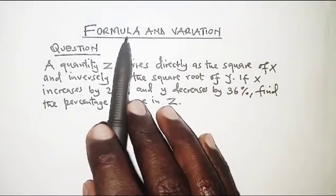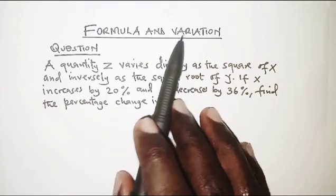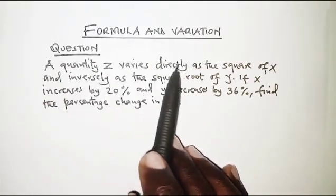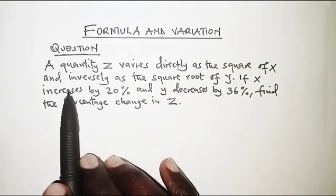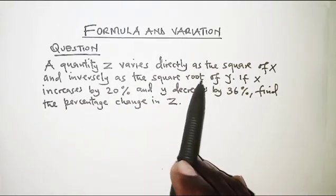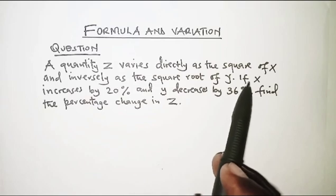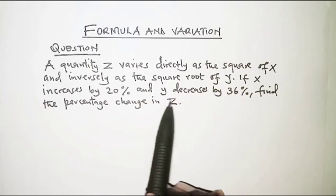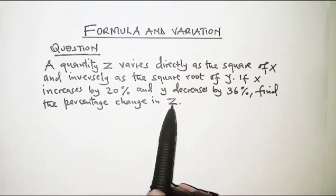Today we look at formulae and variation. The question reads: a quantity z varies directly as the square of x and inversely as the square root of y. If x increases by 20% and y decreases by 36%, find the percentage change in z.